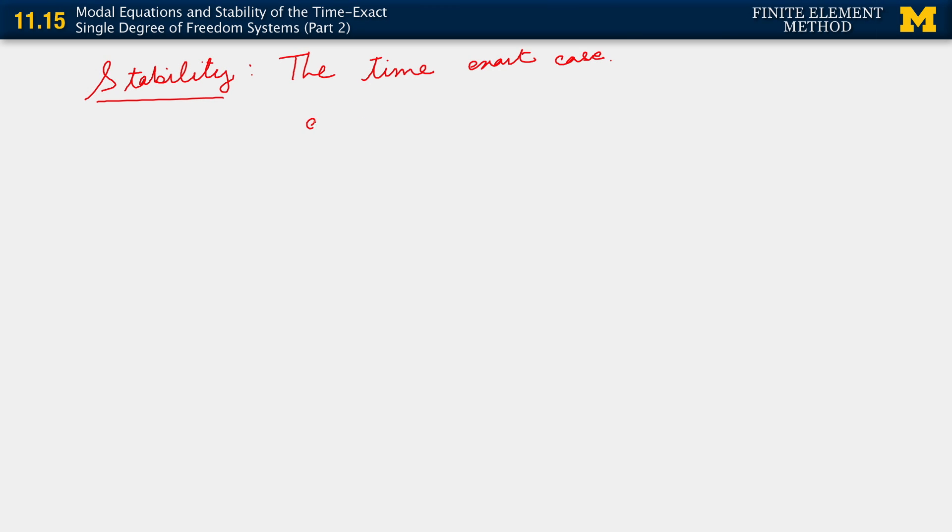We've derived the single degree of freedom modal equations for an arbitrary mode L. Everything we do holds for every mode, because we're really working with an arbitrary mode. With that in mind, I can afford to drop the explicit use of the modal index L. So from now on, for the time-exact case and for the time-discrete case, when working with single degree of freedom modal equations, I'm just going to write them as ḋ scalar plus λ·d equals 0.